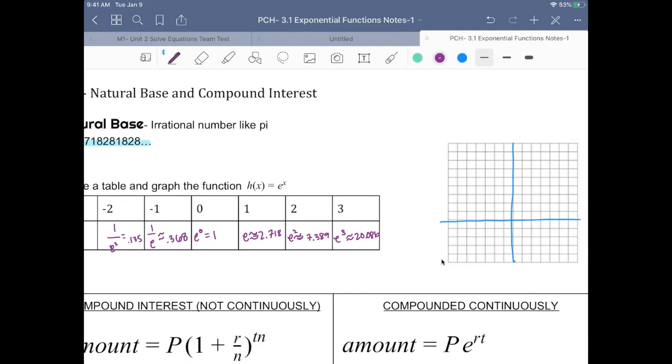At negative 2, it's like 0.13 and 0.36. We go to our (0,1) point. And then (1, 2.7). And then (2, 7.3). So about right there. And then it goes off the graph.